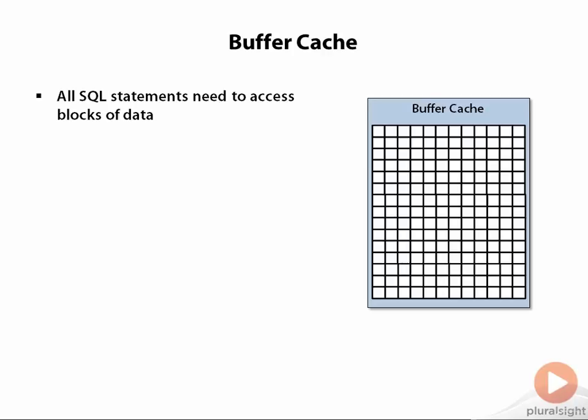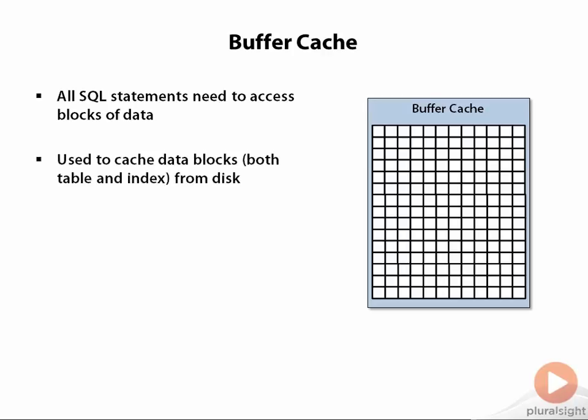The buffer cache is a very large cache of data blocks that Oracle maintains in memory for quick access, and this includes data blocks for both indexes and tables. Just like you might have a cache in an application that you write that keeps the most recently and most often used data in memory, that is what the buffer cache is for Oracle.